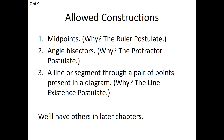If you're given an angle, all angles have an angle bisector, which means you're allowed to construct that angle bisector — that's the Protractor Postulate. Another thing you can construct is a line or a segment through any two points, because we know that through any two points there exists a line — that's the Line Existence Postulate. These postulates give us the ability to construct. We will also look at constructing parallel lines and perpendicular lines later on.